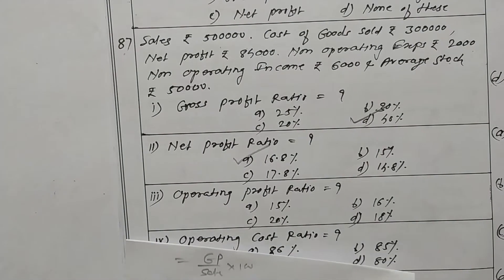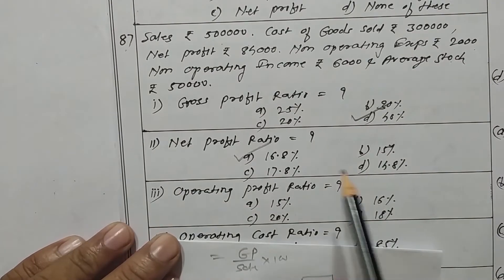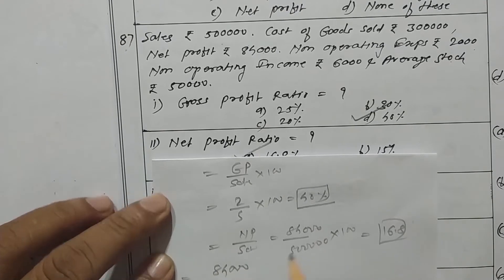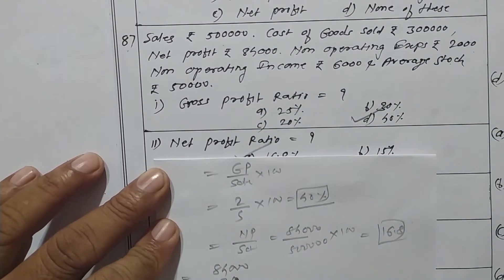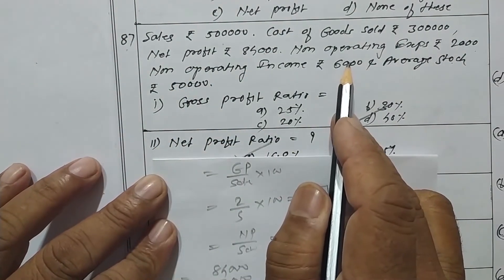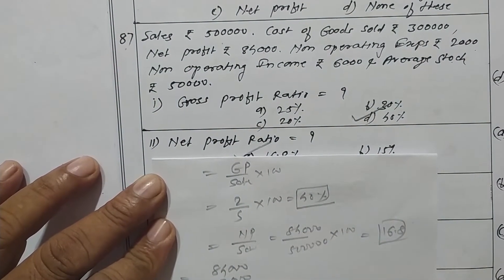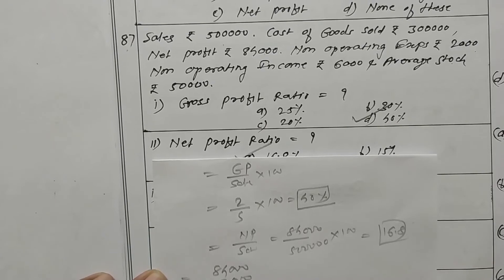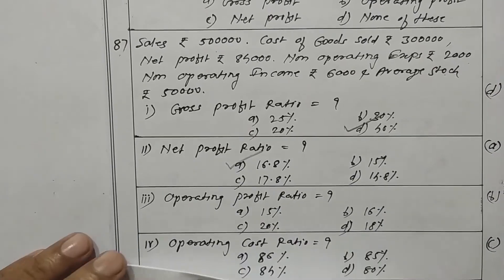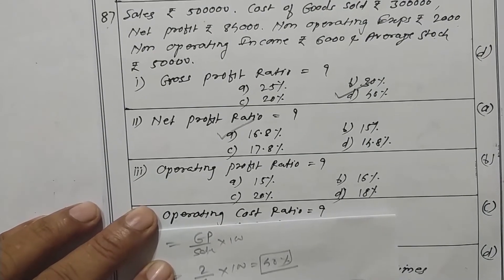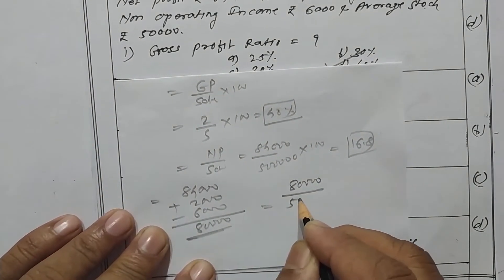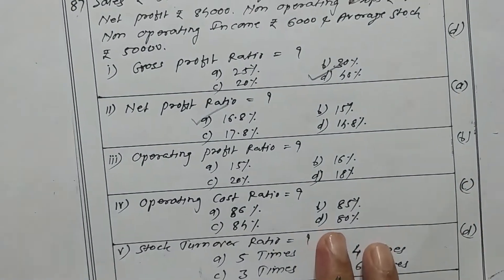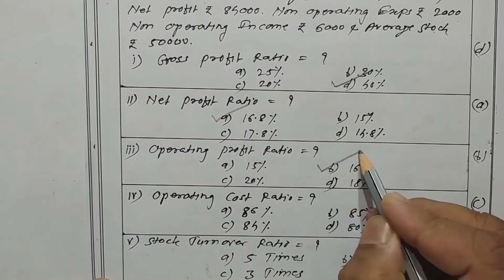Operating profit ratio. We find net operating profit by adjusting: net profit is 84,000, add non-operating expenses of 2,000, and deduct non-operating income of 6,000, giving operating profit of 80,000. Operating profit ratio is 80,000 divided by 5 lakhs, which gives 16 percent. Option B is the correct one.